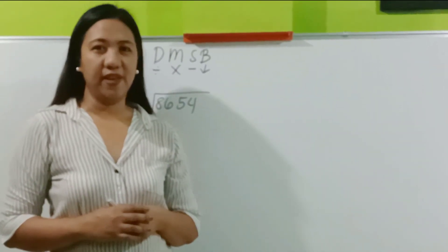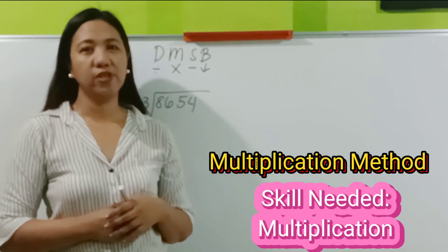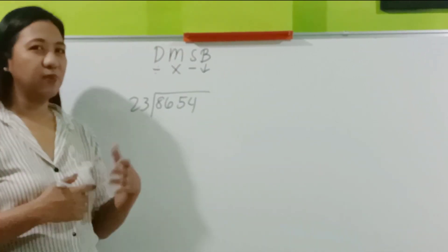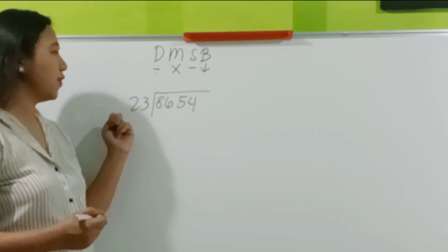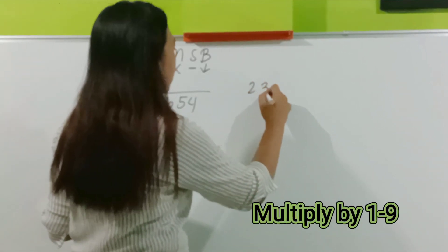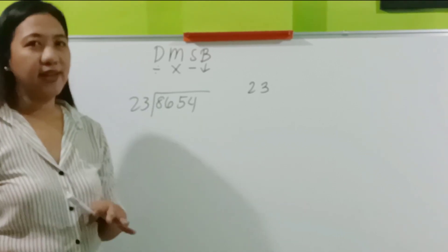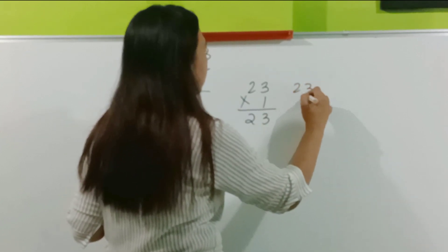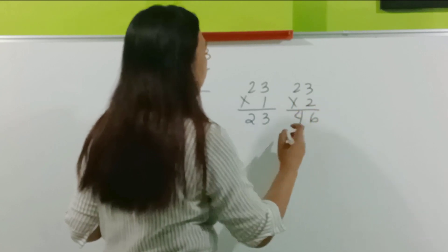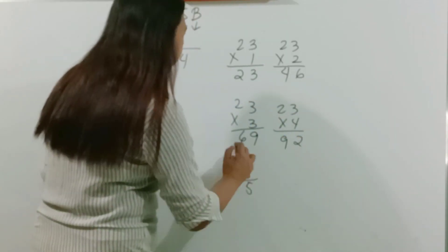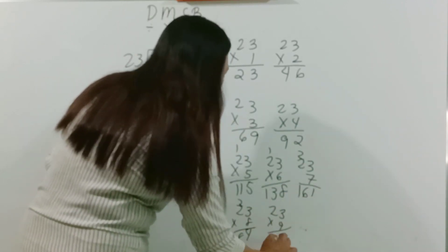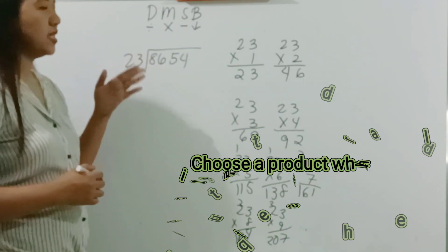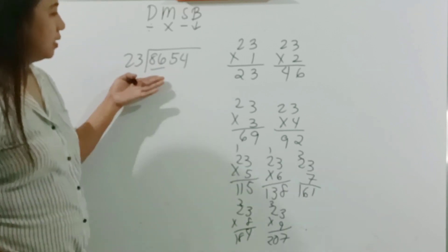Now, we go to the last method. This method is very applicable to those who are good in multiplication. How is it done? Let's use the same digits as before. So, 8,654 divided by 23. We have to multiply 23 by 1 to 9. We have to list them down. These are all the products.